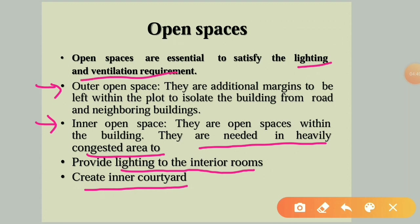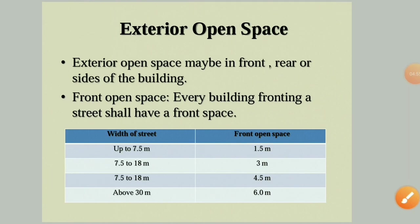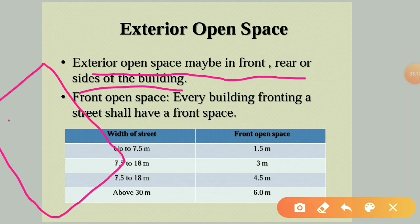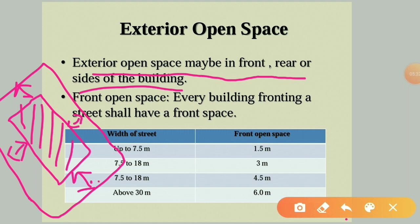Exterior open space may be at the front, rear, and sides of the building. If this is the plot and this is the building area, the front open space faces the road, the rear open space is at the back, and the side open spaces are on the left and right sides.